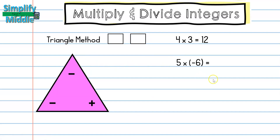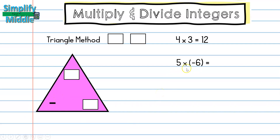For 5 times negative 6, we cover the positive part of the triangle and one of the negatives. That leaves a negative uncovered, so our answer is negative. Since 5 times 6 is 30, the answer is negative 30.